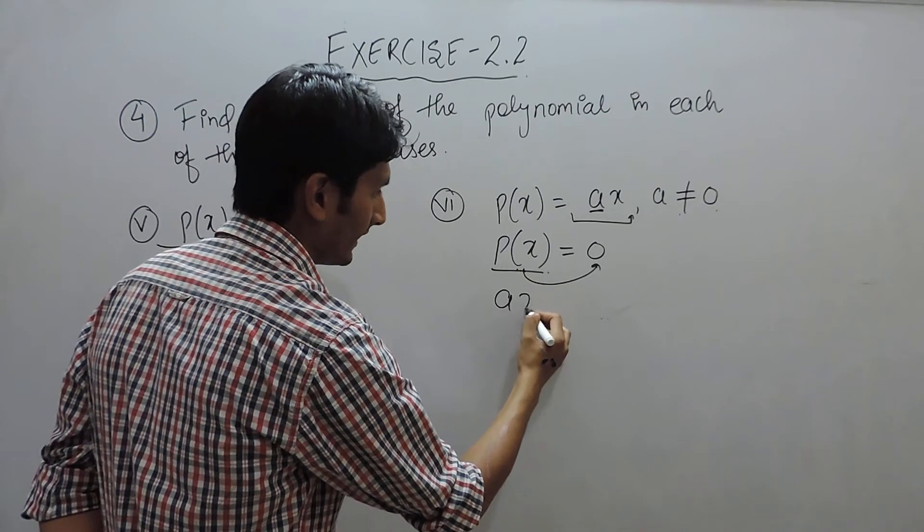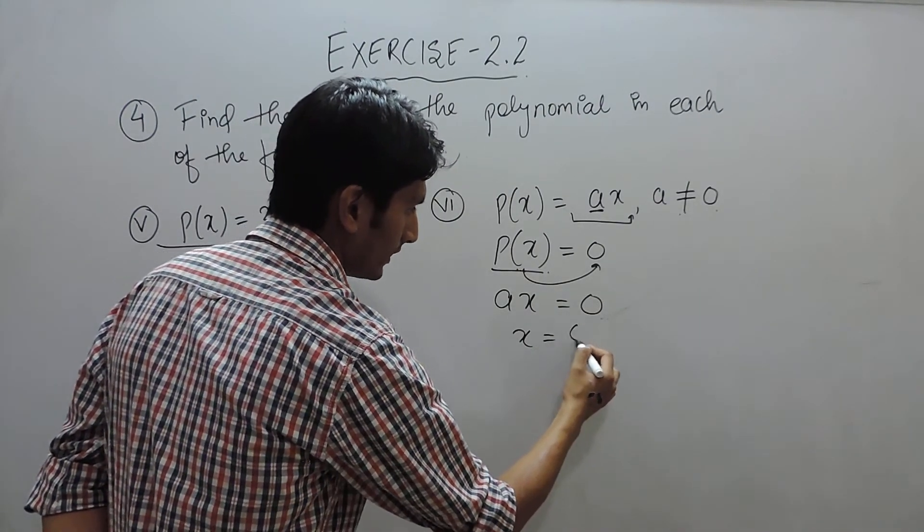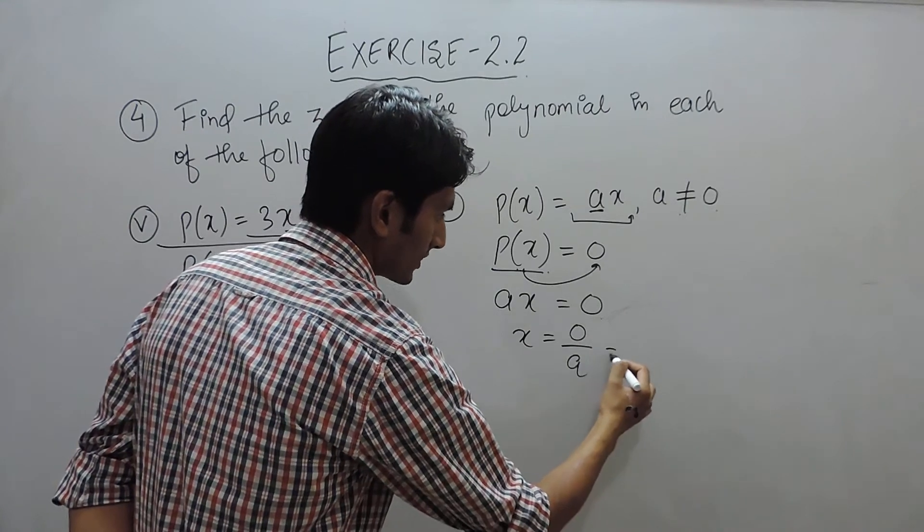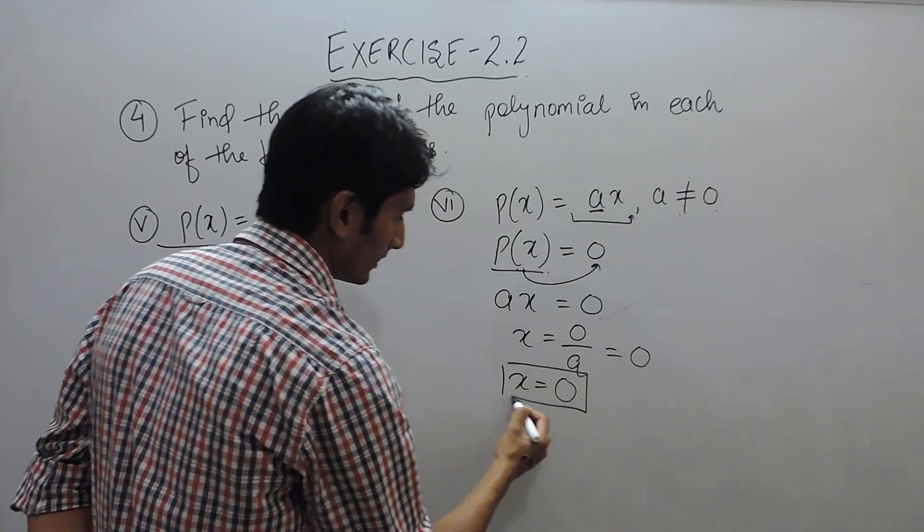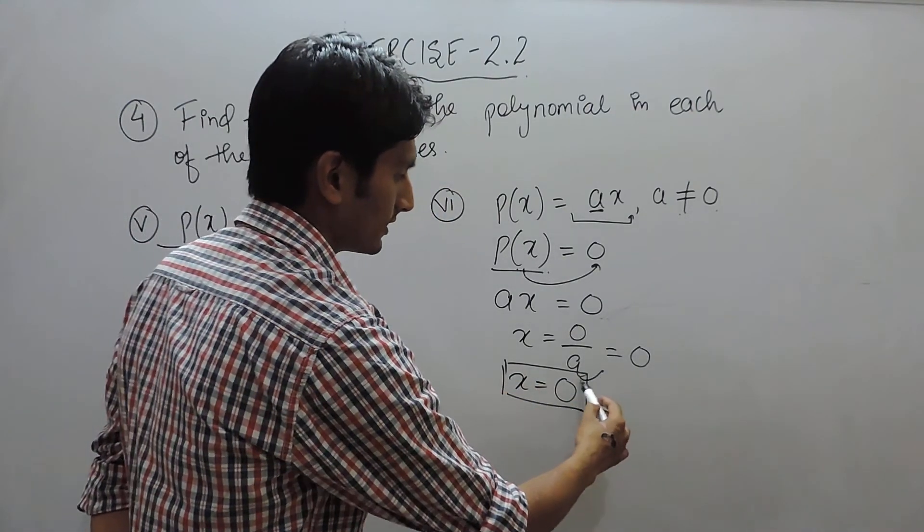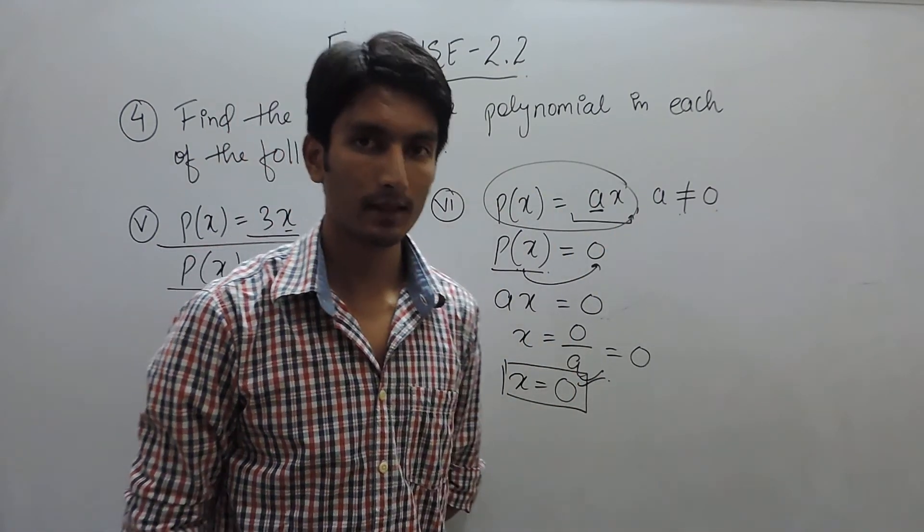So the polynomial is ax equals 0. The value of x must be 0 upon a, which is again 0. So the value of x in this case also must be 0. This is the zero for this particular polynomial. Thank you.